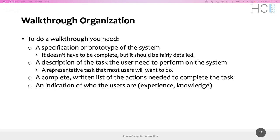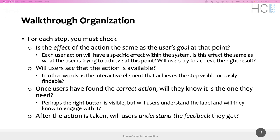With these four things prepared, each evaluator individually starts the cognitive walkthrough, replicating all the actions and for each action answering the following four questions. The first question is: is the effect of the action the same as the user goal at that point? Each user action has a particular effect — is this effect what the user is trying to achieve? In other words, is the designer making wrong assumptions about the mental model of the user or the experience level of the target population?